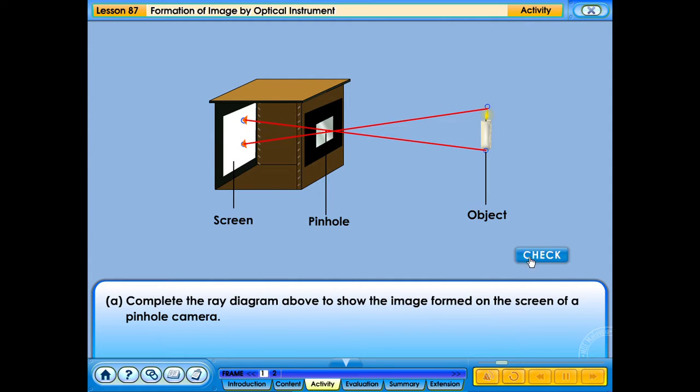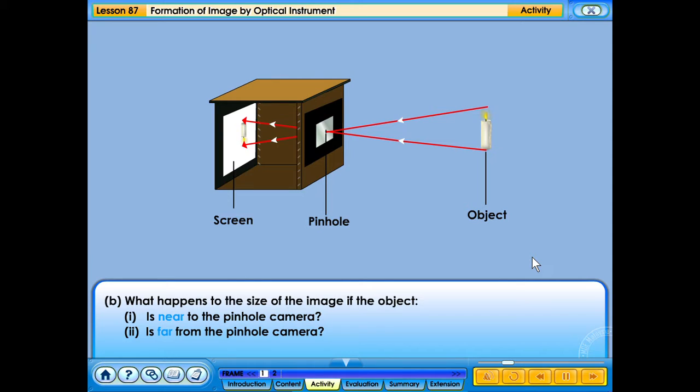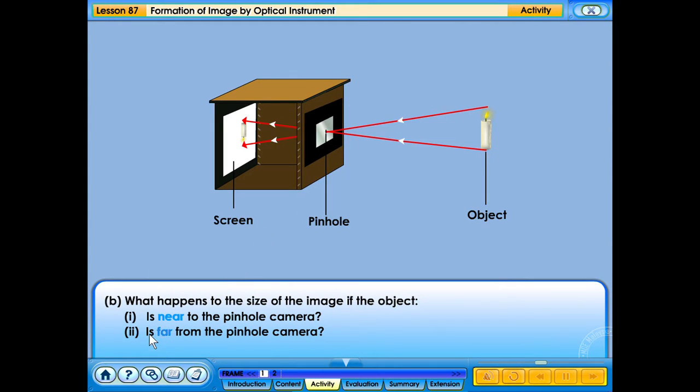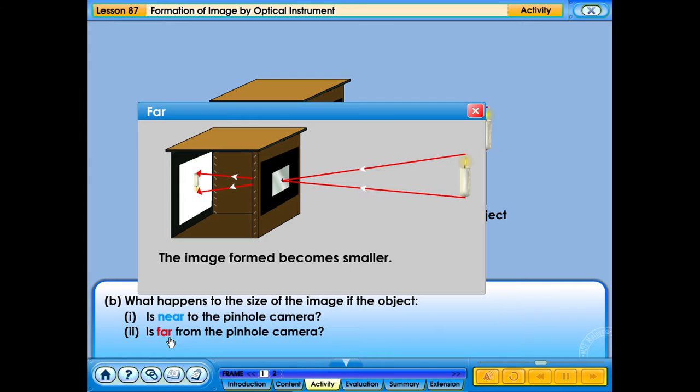Your answer is correct. What happens to the size of the image if the object is near to the pinhole camera or far from the pinhole camera? The image formed becomes bigger. The image formed becomes smaller.